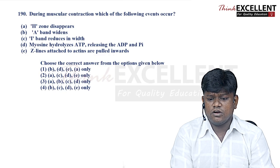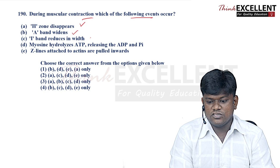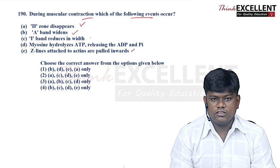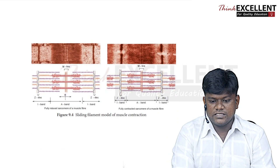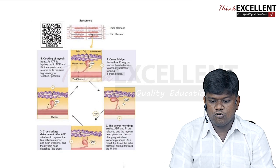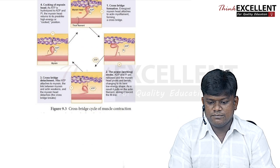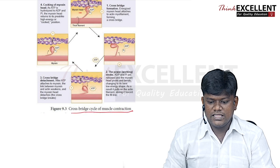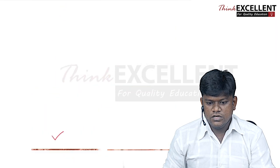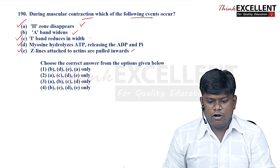Question 190: during muscular contraction, which events occur? The sliding filament model involves the sarcomere — M-line, A-band, Z-disc, I-band. H-zone narrows, I-band reduces, myosin hydrolyzes ATP releasing ADP and phosphate, and Z-lines attached to actin are pulled inwards. A-band width does not change. Option 2 — statements A, C, D, and E — is the right answer.